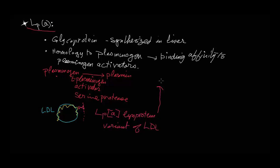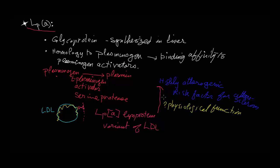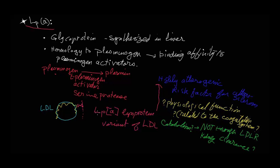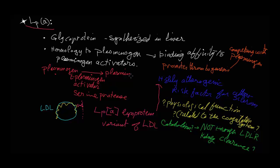This Lp(a) variant is highly atherogenic and is a risk factor for atherosclerosis. We don't know exactly what its physiological function is, but it may be related to the coagulation system. Its catabolism is not through the LDL receptor — it may be subject to kidney clearance. The atherogenic properties of Lp(a) are related to the fact that it promotes thrombogenesis by competing with plasminogen, thereby reducing fibrinolysis. It occupies the active sites on the plasminogen activator serine proteases, preventing the conversion of plasminogen to plasmin.